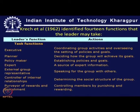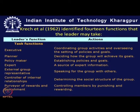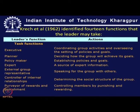Critch et al. in 1962 identified 14 functions a leader may take, divided into task functions and maintenance functions. Task functions include: executive — coordinating group activities and overseeing policy and goal setting; planner — deciding how the group will achieve its goals; policy maker — establishing policies and goals; expert — serving as a source of expert information; external group representative — speaking for the group; controller of internal relationships — determining the social structure; and purveyor of rewards and punishment — controlling members by punishing and rewarding.